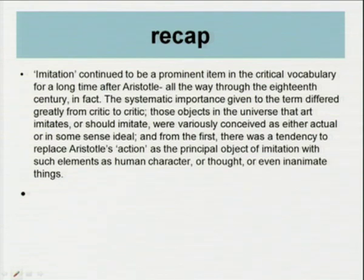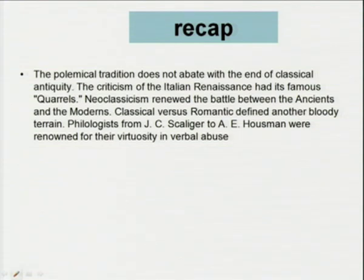The systematic importance given to the term 'imitation' differed greatly from critic to critic. Those objects that art imitates were variously conceived as actual or ideal. There was a tendency to replace Aristotle's 'action' as the principal object of imitation with human character, thought, or even inanimate things. As Abrams discussed in The Mirror and the Lamp, there may be two antithetic metaphors of mind — the imitative and the expressive. The polemical tradition does not abate with the end of classical antiquity.